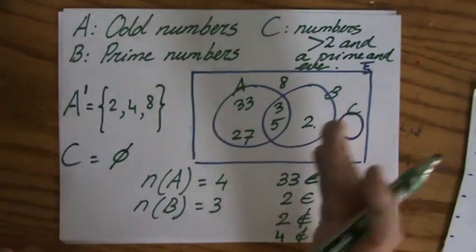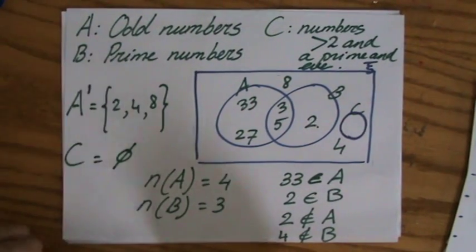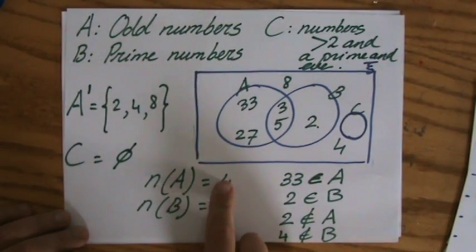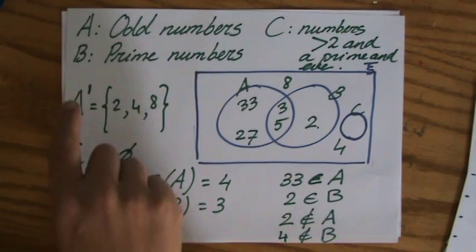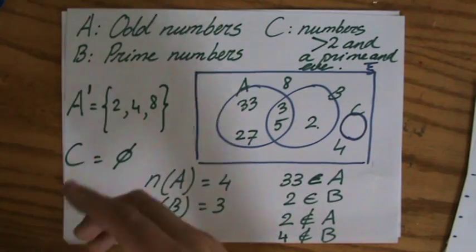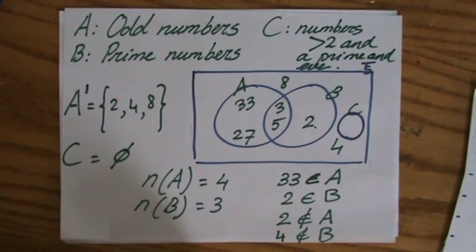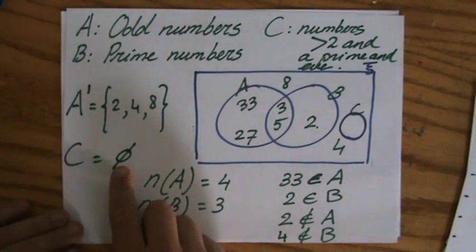So a couple of very important notations already. The number of elements. 33 is an element of A, or 2 is not an element of A. The complement set of A, which means everything outside of A. And we have spoken about the empty set.